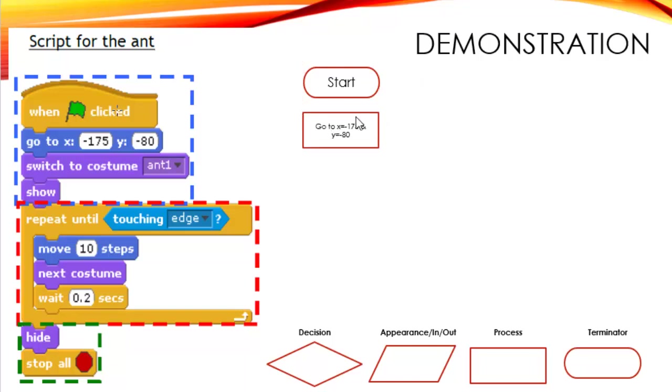Make sure you tidy this up until it looks perfect. Next, go to costume, switch to costume ant 1. To switch, it is an appearance. So I am going to use a parallelogram. Next, to show is an input output. So I am going to use a parallelogram. And repeat until touching edge is a question. I am going to use a diamond.